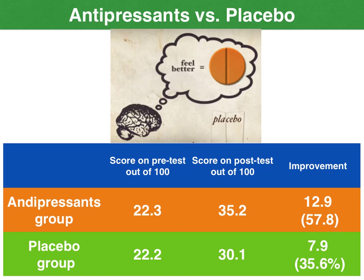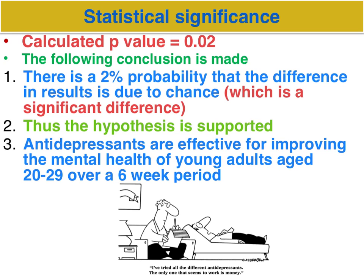But what about a significant result? Studies have actually shown that for people with severe symptoms of depression — i.e. suicidal thoughts — antidepressants are in fact significantly more effective in improving their mental health than placebo. So with a new bunch of hypothetical numbers generated here, we've got our scores in terms of numerical and percentage improvement, and we need to generate a p-value to determine the significance of these results. This time we have a calculated p-value of 0.02, and again, the scenario will give you this figure — you just have to interpret and provide a conclusion when asked.